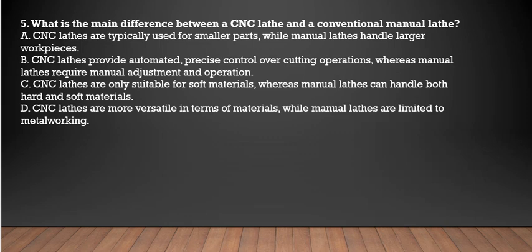Next question: what is the main difference between a CNC lathe and a conventional manual lathe? A CNC lathe provides automated, precise control over cutting operations, whereas a manual lathe requires manual adjustment and operation. CNC stands for Computer Numeric Control — it is computer-based. So the correct answer is option B: CNC provides automatic precise control over cutting operations, while manual requires manual adjustment.